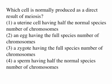Which cell is normally produced as a direct result of meiosis? Without even looking at the choices, you know it's either sperm or egg. Looking at the choices, it's got to be two or four — the other two are nonsense. Number two says an egg having the full species number of chromosomes, and number four says sperm having half the normal species number of chromosomes. So the answer is four — meiosis makes half the chromosome number.